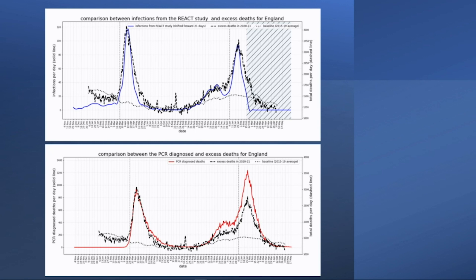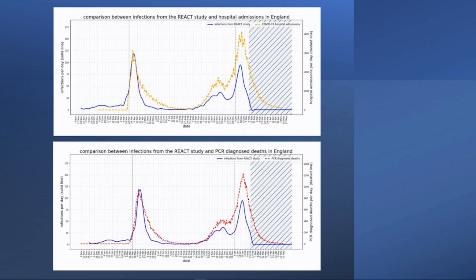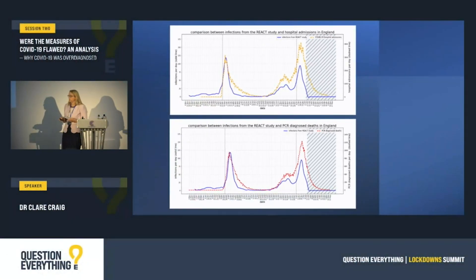When you look at PCR positive deaths — this red line — it fitted well in the spring, but the second wave has massively exaggerated the number of deaths compared with excess mortality. If we look at PCR hospital admissions — these orange ones at the top — the second wave is much, much higher than the symptomatic cases. In just this early part of the second wave, there were 43% more symptomatic people than in the first wave, but there were 120% more people diagnosed with PCR in hospital and 88% more PCR positive deaths.